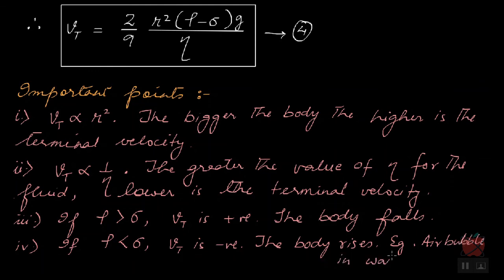If an exam question asks why a marble falls when immersed in water but an air bubble rises: for the marble, density of marble is greater than density of water, so terminal velocity is positive and it falls. For the air bubble, density of air is less than density of water, so terminal velocity is negative and the air bubble rises. This is all about terminal velocity.